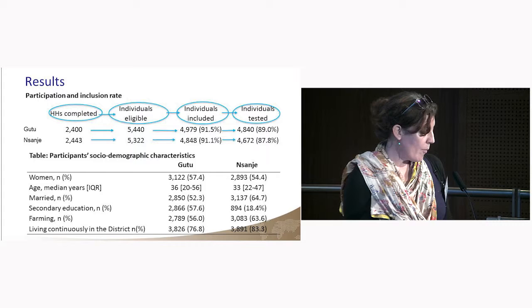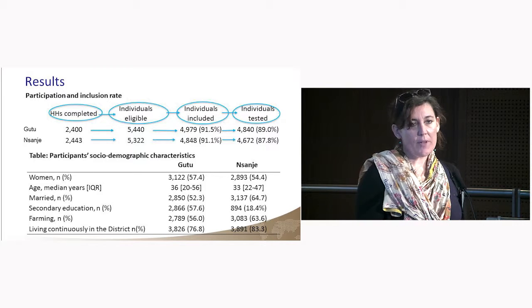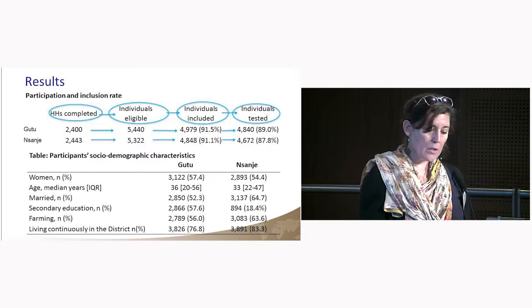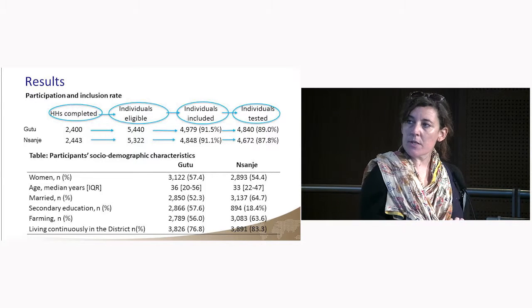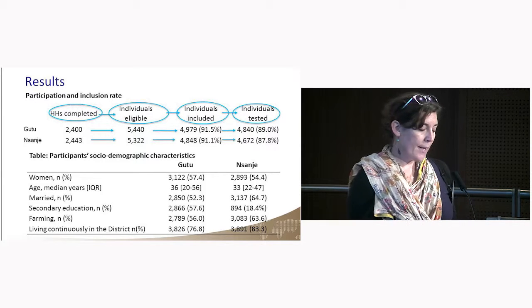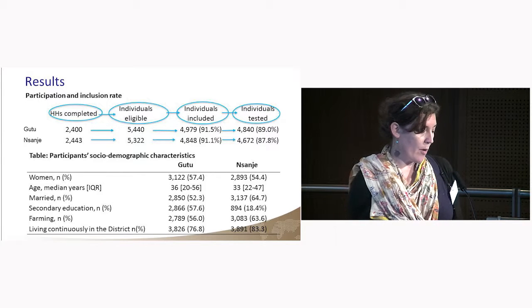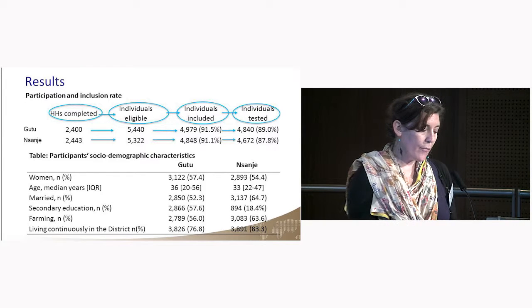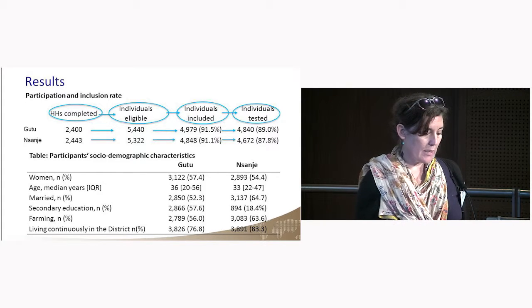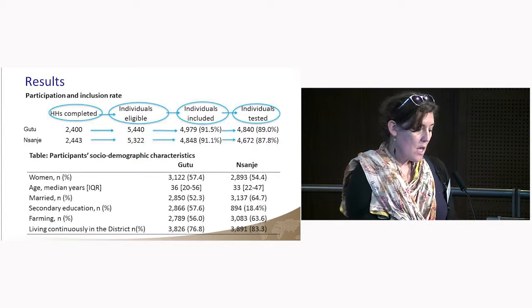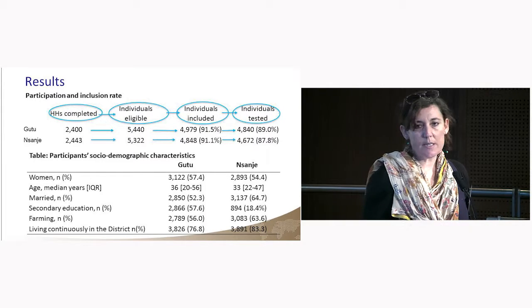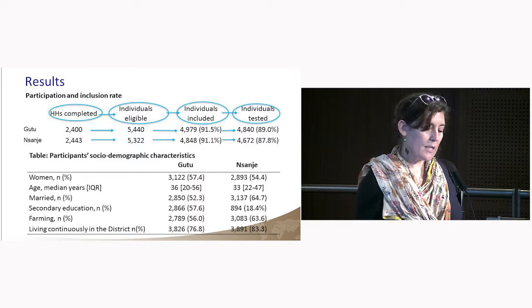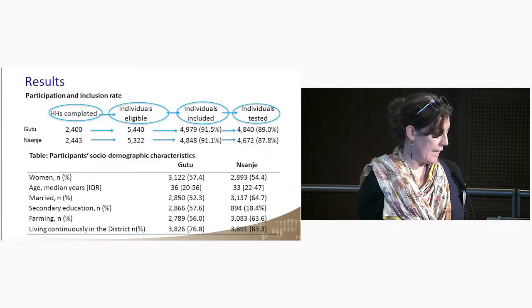In terms of sociodemographic characteristics, in both settings most participants were women, most were married, farmers, and living continuously in the district. The median age of participants was 36 years in GU2 and 33 years in NSANJ.